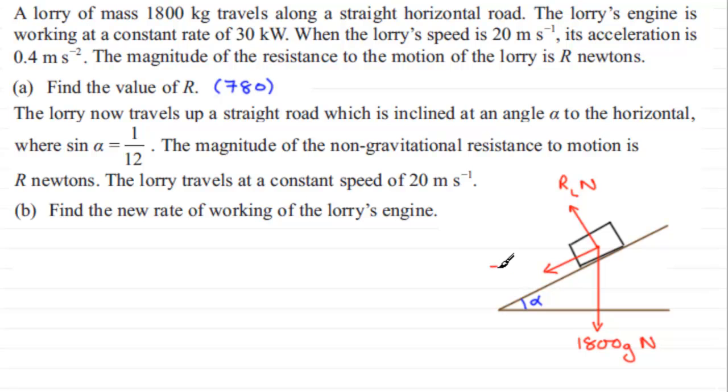And there's this new driving force pulling the lorry up the incline. Now we're told that the lorry travels at a constant speed of 20 meters per second. So it's going up here at 20 meters per second, just mark that in there. It's a constant speed. So as far as acceleration goes, that acceleration is going to be 0 meters per second per second.